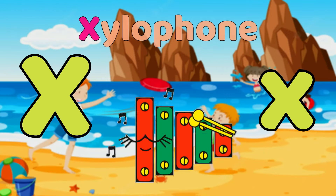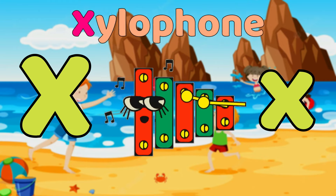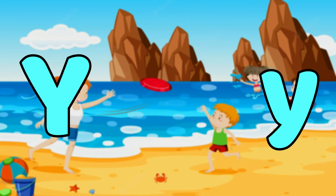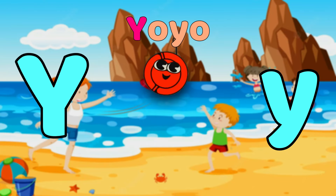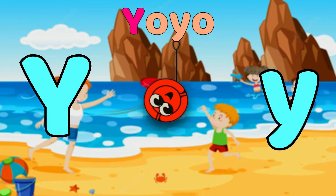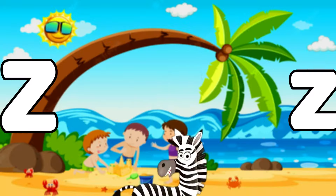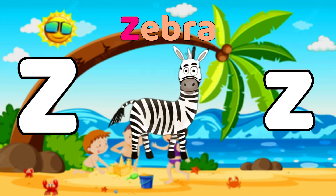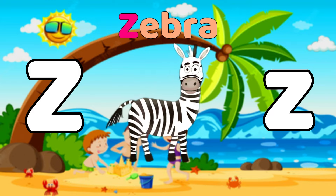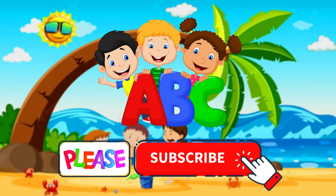X is for Xylophone, z-z-xylophone, z-z-xylophone, X-xylophone. Y is for Yo-yo, y-y-yo-yo, y-y-yo-yo, Y-yo-yo. Z is for Zebra, z-z-zebra, z-z-zebra, Z-zebra. Stop, Kaido.